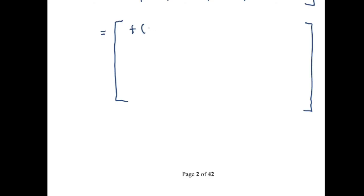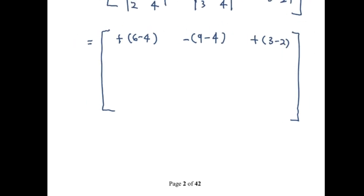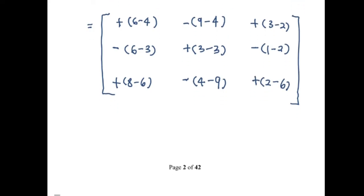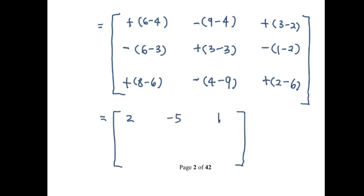For the first row: (2×3 − 4×1) = 6 − 4 = 2; then −(9 − 4) = −5; then +(3 − 2) = 1. For the second row: −(6 − 3) = −3; +(3 − 3) = 0; −(1 − 2) = −(−1) giving... For the last row: +(8 − 6) = 2; −(4 − 9) = 5; +(2 − 6) = −4. So we get the cofactor matrix [2, −5, 1; −3, 0, 1; 2, 5, −4].